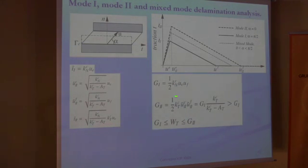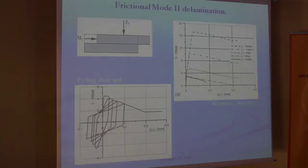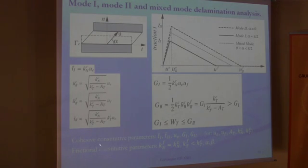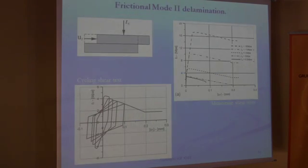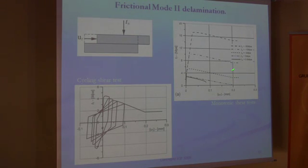The mode 1 fracture energy is defined by only five cohesive constitutive parameters and three frictional constitutive parameters. The frictional effect can be understood from these two graphs showing the monotonic shear test under compressive load, where it can be observed that for a greater compressive load the shear resistance increases.